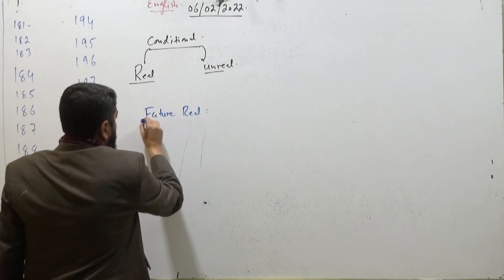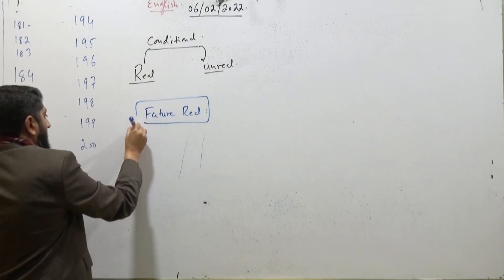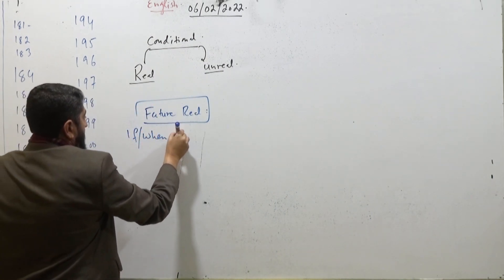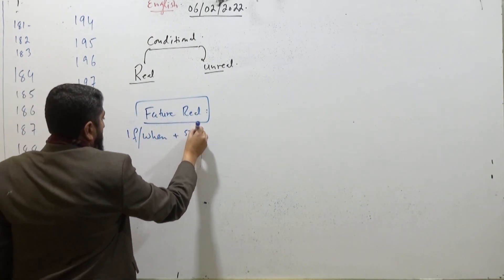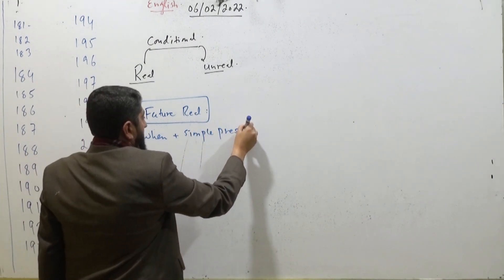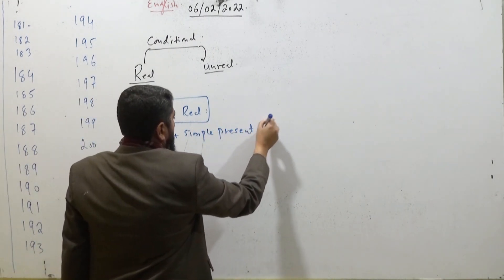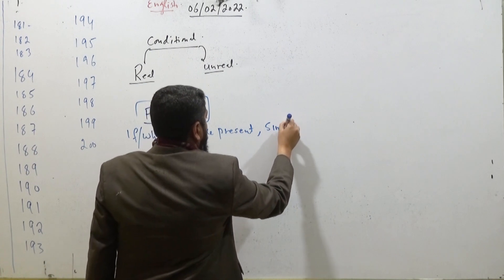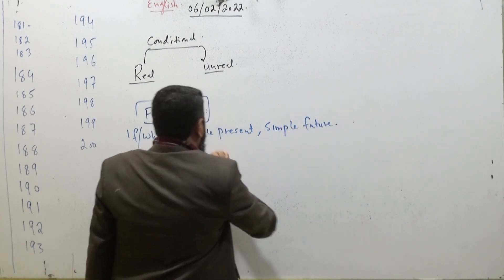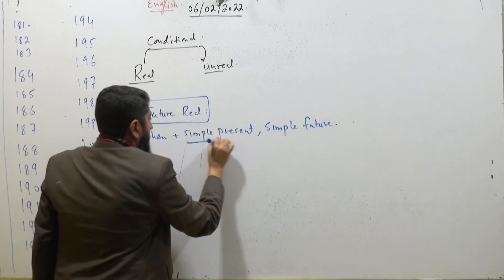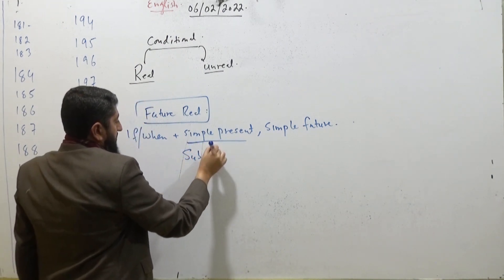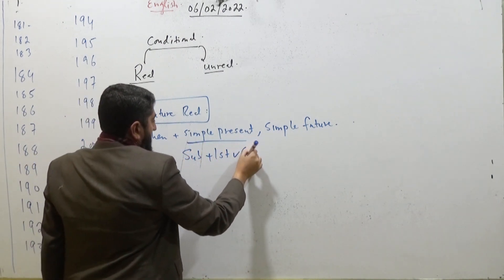And if you have this structure and formula — if/when plus simple present and simple future — then we have this structure: subject plus first verb plus rest of the sentence.